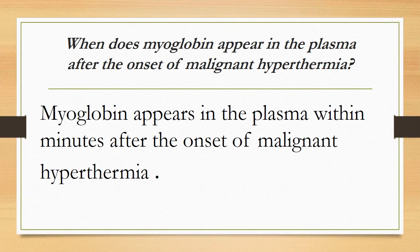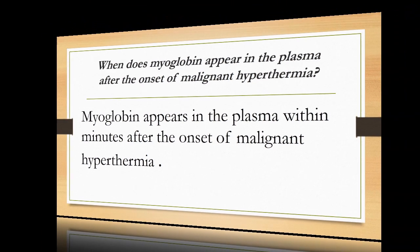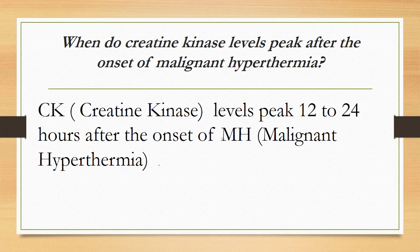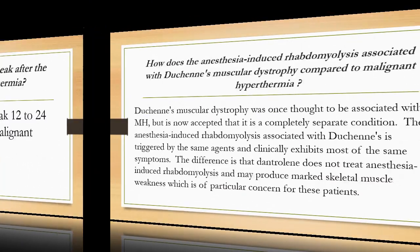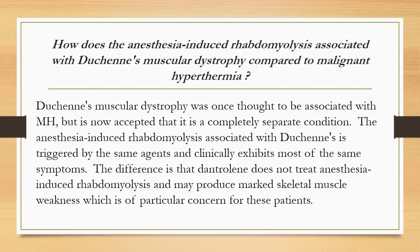When does myoglobin appear in the plasma after the onset of malignant hyperthermia? Myoglobin appears in the plasma within minutes after onset. When do creatine kinase levels peak? Creatine kinase levels peak 12 to 24 hours after the onset of malignant hyperthermia.